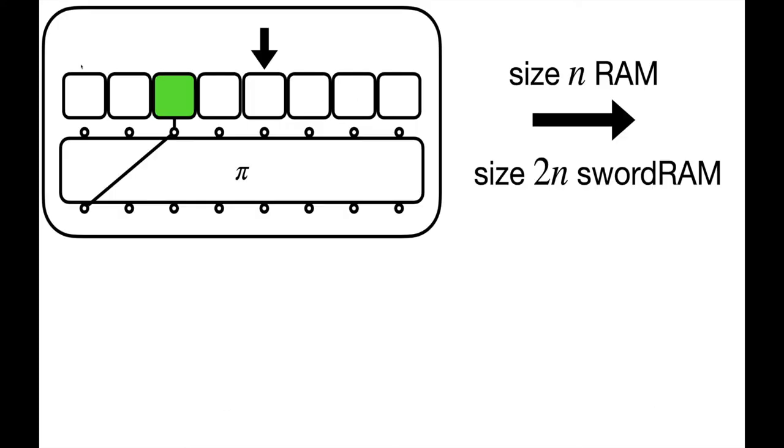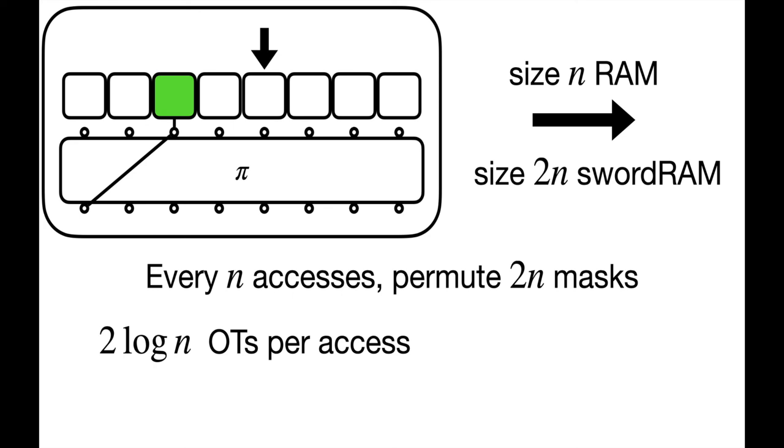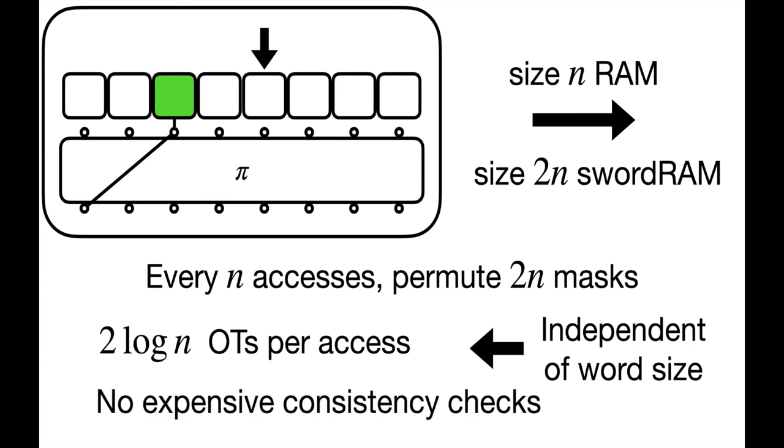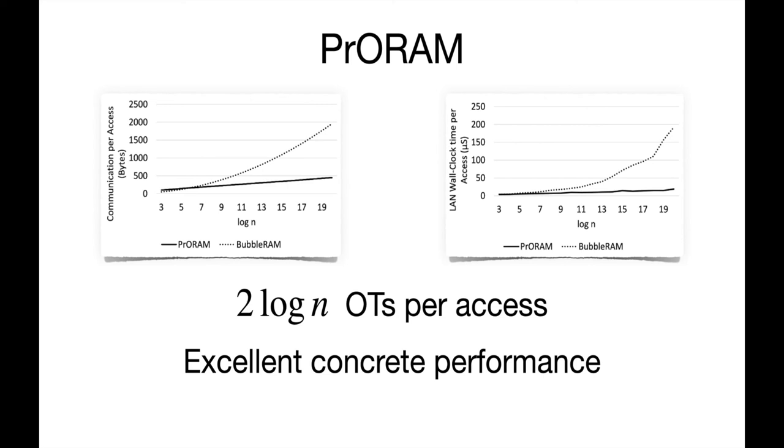To recap, ProRAM builds a size N RAM from a size 2N sword RAM. Each time we initialize a size 2N sword RAM, the prover programs a permutation on 2N masks. This means that on each access, we consume amortized 2 log N oblivious transfers. Notice that the number of oblivious transfers is independent of the size of elements stored in the RAM. Additionally, ProRAM features extremely straightforward consistency checks. This is in contrast to other ZKORAMs that require a much more complex consistency check involving comparison operations on both RAM indices and on timestamp values. To conclude, I want to briefly look at ProRAM's performance. We implemented ProRAM in C++ and ran it on commodity hardware. In terms of communication, our implementation confirms ProRAM's low logarithmic scaling. And in terms of wall clock time, ProRAM gives excellent performance, requiring only a few microseconds per access, even for moderate RAMs that store megabytes of data.